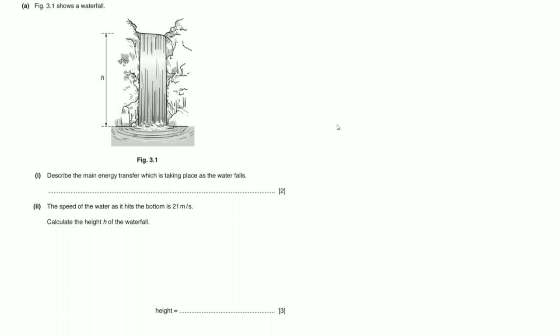Before we finish up, let's go through this quick waterfall example. The water at the top has gravitational potential energy. As it falls down it gains kinetic energy, because gravitational potential energy is being converted to kinetic energy. As the object loses gravitational energy, it gains the same amount of kinetic energy — that's conservation of energy. The main energy transfer in a waterfall is gravitational to kinetic.